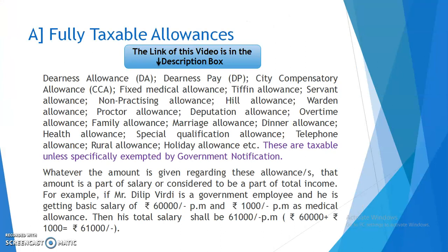Fully taxable allowances include DNS allowance, DNS pay, CT compensatory allowance, fixed medical allowance, Tiffin allowance, and Servant allowance — all these are fully taxable allowances. These are taxable unless specifically exempted by government notification. Whatever amount is given regarding these allowances, that amount is a part of salary or considered to be a part of total income.